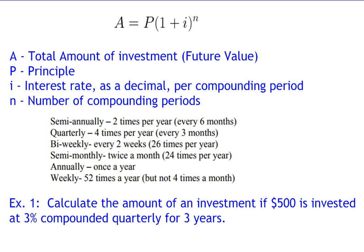Here's the formula we use for compound interest: A equals P times open bracket one plus i close bracket to the power of n. In this equation: A is the total amount of money you have at the end; P is the principal, the amount you invested to begin with; i is the interest rate as a decimal per compounding period. With compound interest you can compound once a year, monthly, or even daily — so we need to figure out the interest rate per compounding period.